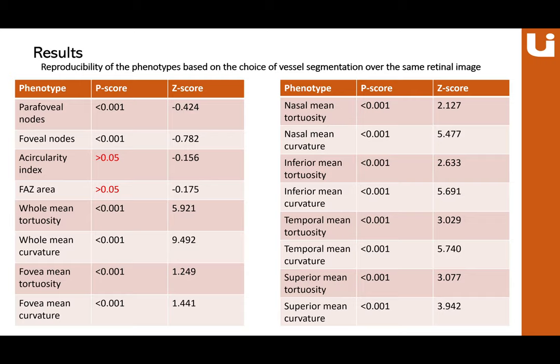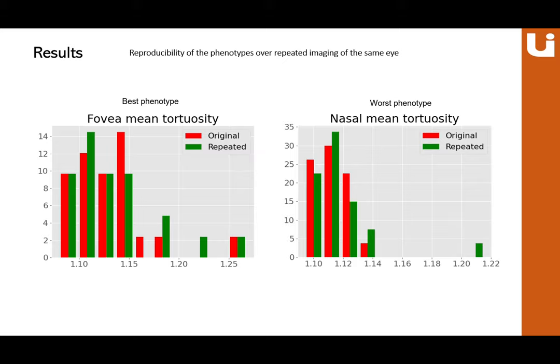For the second part, things get more interesting. Vessel segmentation does indeed play a role — z-scores are largely varied, with the largest being 9.4. Only two phenotypes, the circularity index and the foveal area, passed the p-test with good z-scores. This can be explained by the fact that these metrics are captured from the foveal center, which is typically a dark circle with no vessels, so the segmentation algorithm does not significantly affect that area.